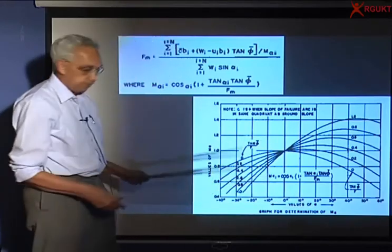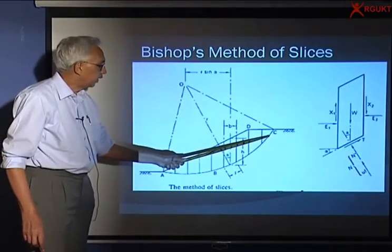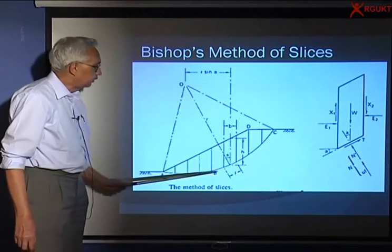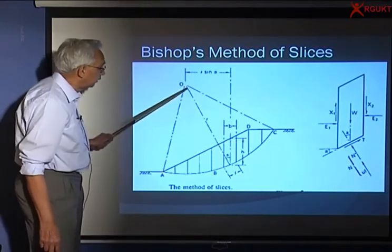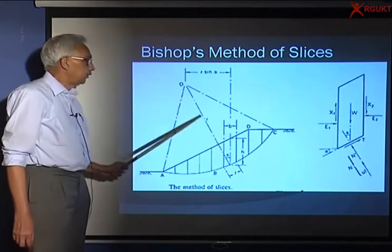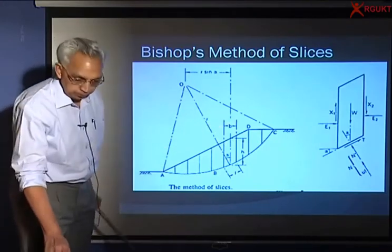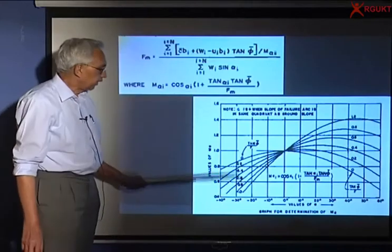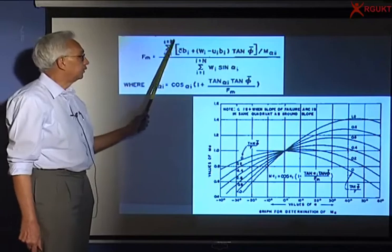Because you remember, when you look at the alpha, it can vary. Alpha can be 0 here, it can be very high. Alpha can also be negative. Please remember, if I take the vertical, to the right alpha is plus, and to the left it is negative. So based on that, I can easily get this M alpha, and that I use here to calculate the factor of safety.